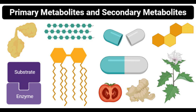Regarding quantity, primary metabolites are produced in large quantities, whereas secondary metabolites are produced in small quantities. Extraction is easier for primary metabolites but difficult for secondary metabolites. In terms of specificity, primary metabolites are not species-specific and may be identical across organisms, while secondary metabolites are species-specific and differ between organisms.